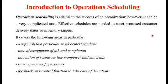Operation Scheduling covers the following areas: it assigns a Job to a particular Work Center or Machine; it covers the Time of Assignment and Completion of a Job; it handles Allocation of Resources like Manpower and Material; it addresses Utilization; and it covers the Time and Sequence of Operations.